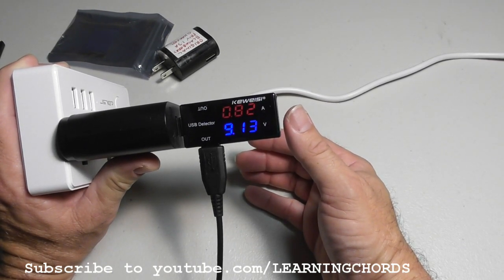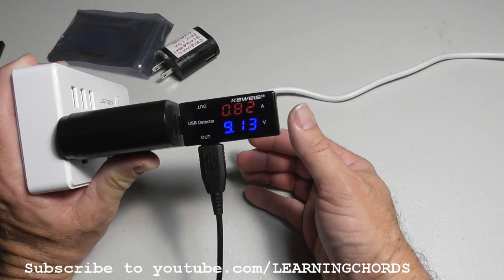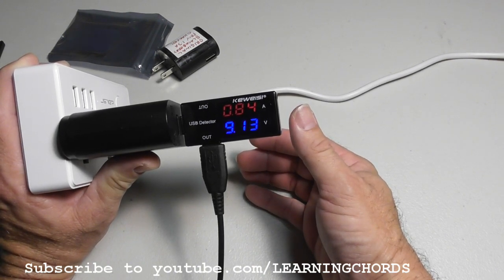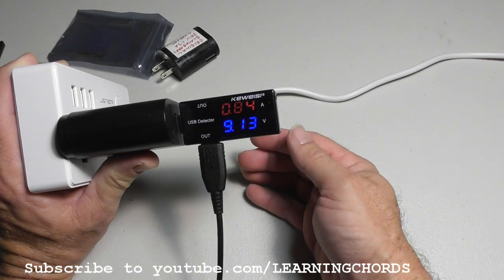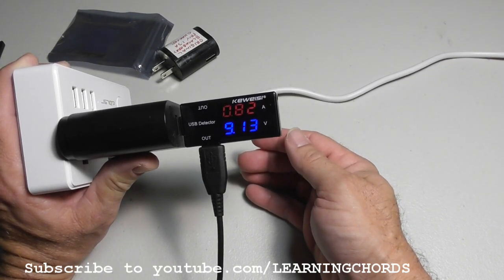Some of these things, this doesn't have a switch. Some of these units you've got a button you can press on here and you can get different readings - you can get different readings of current, different types of current, or I think peak current. This one seems to be very basic, that's probably why it's three dollars.